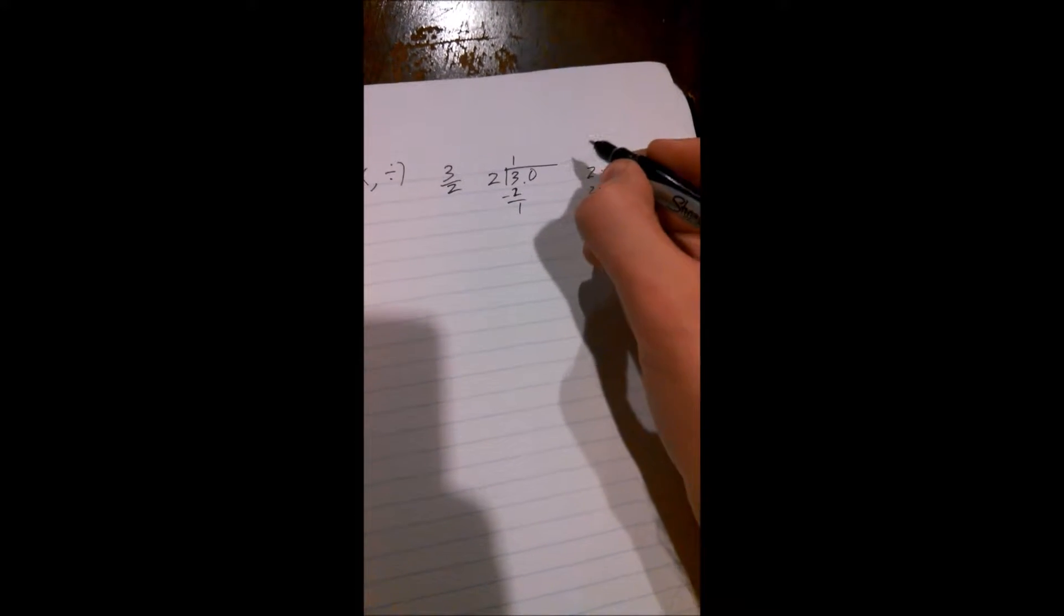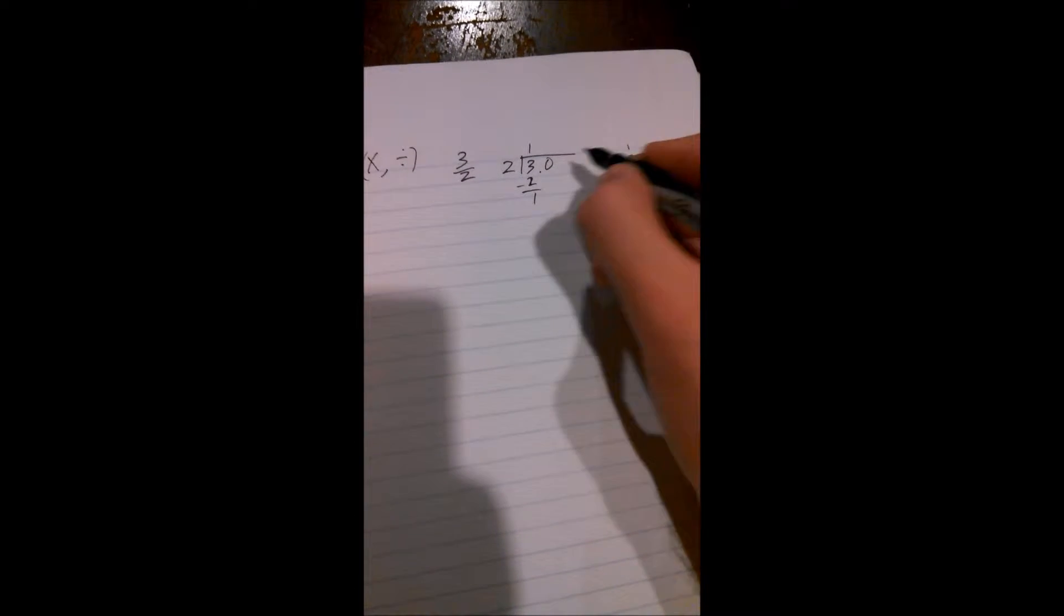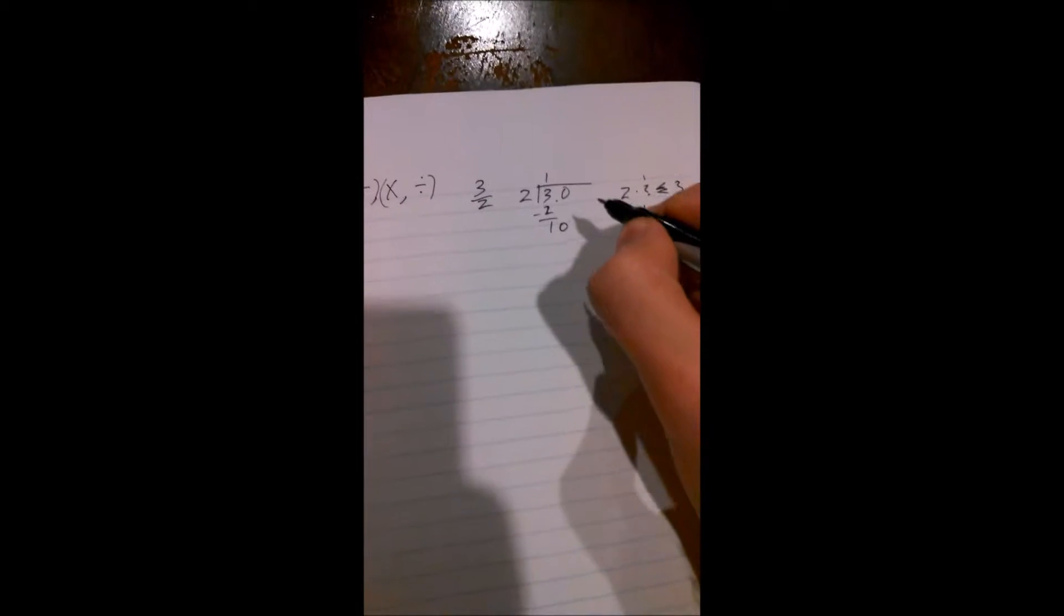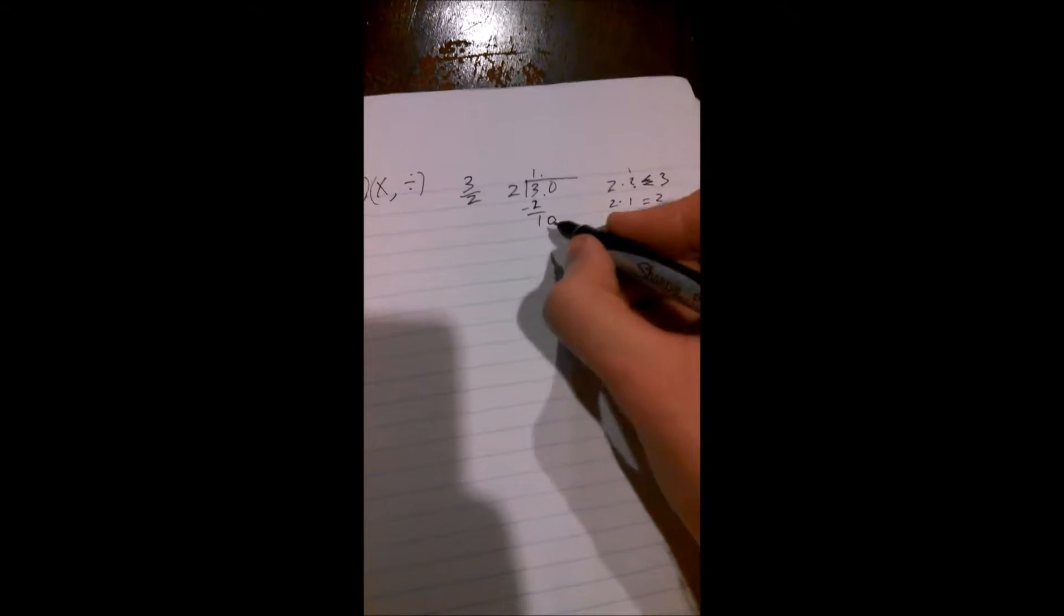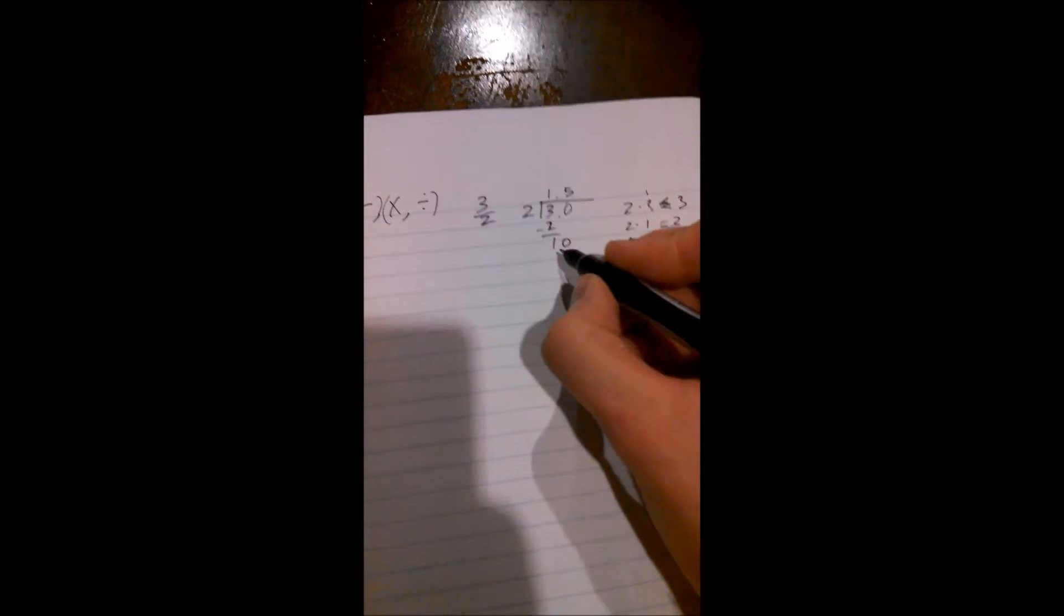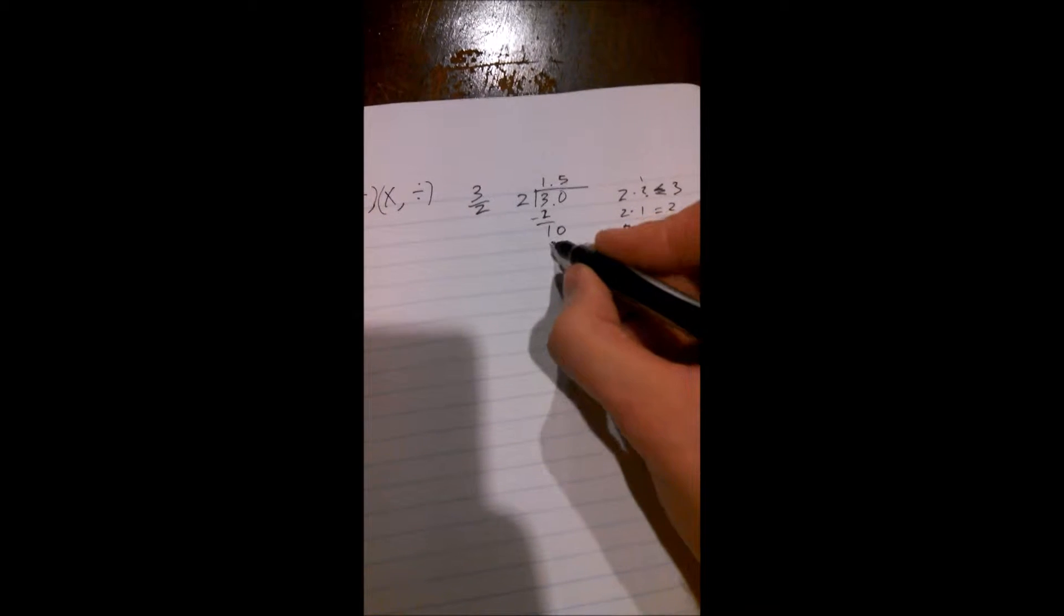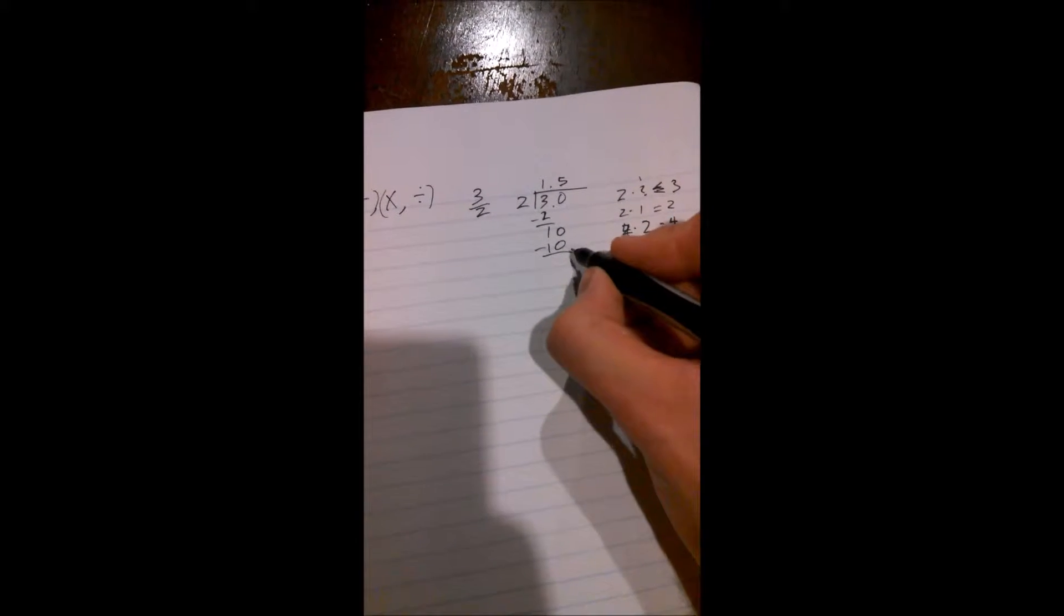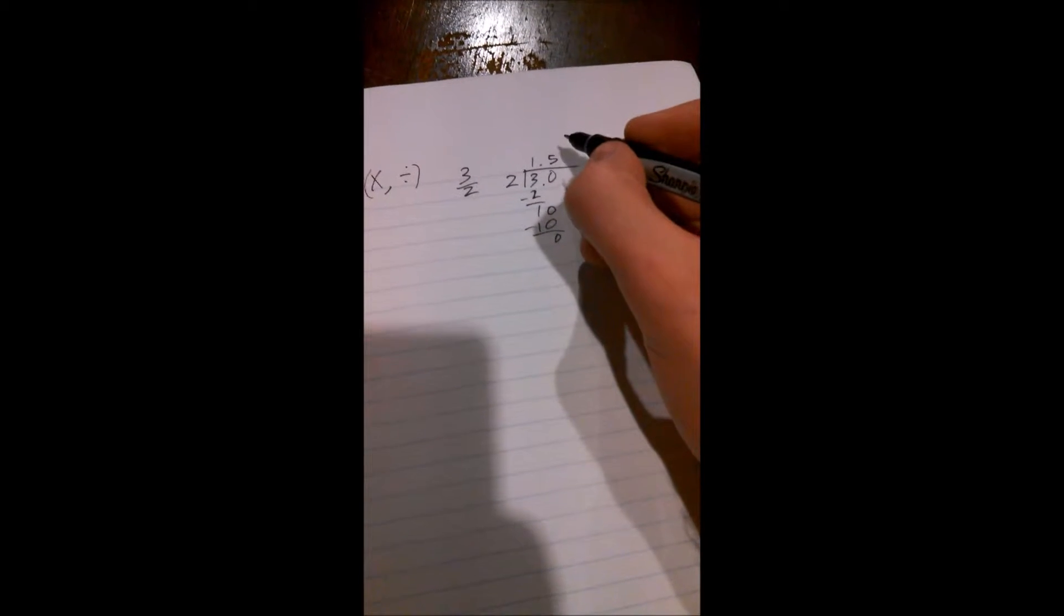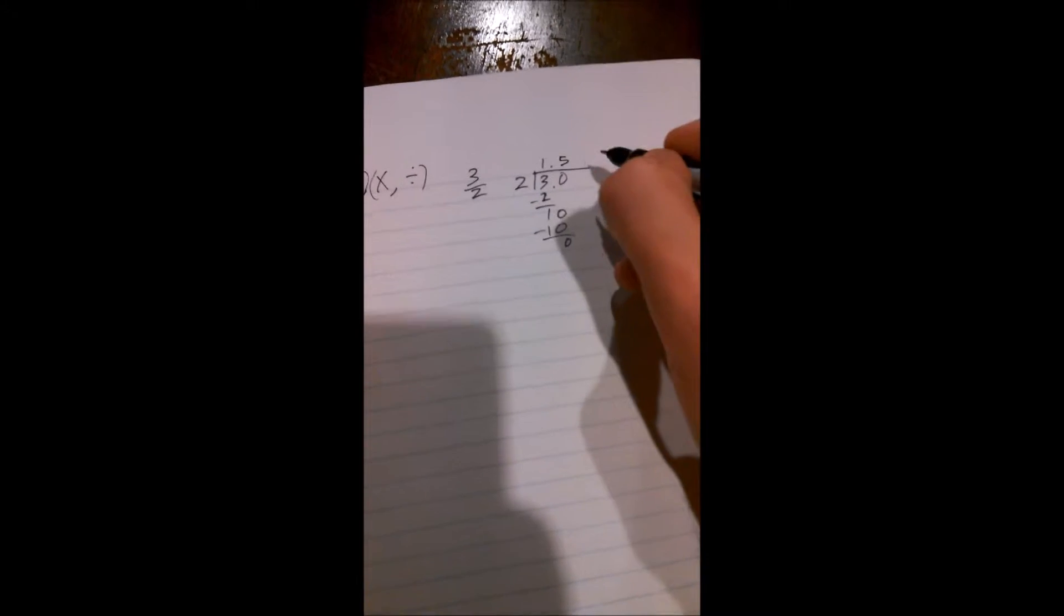Then we take the next decimal, which is an implied 0, and bring that down. And so what number times 2 will give us 10? Well, that's easy, that's 5. So 5 times 2 is 10, and that goes to 0. So this is a fraction that gives us a set number of digits.